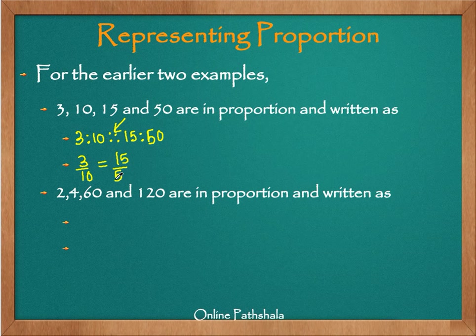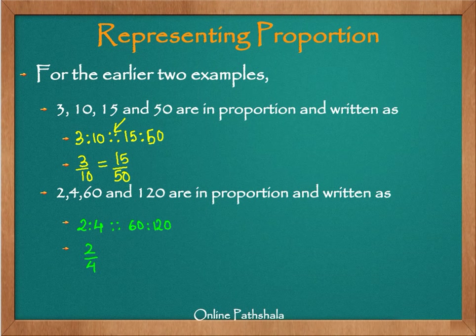Similarly, for the other example we discussed in the previous video, we have 2, 4, 60, and 120 in proportion. We can write those as: the ratio 2 is to 4 is in proportion to the ratio 60 is to 120.